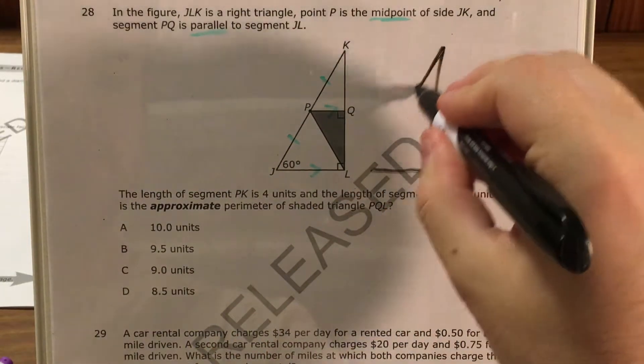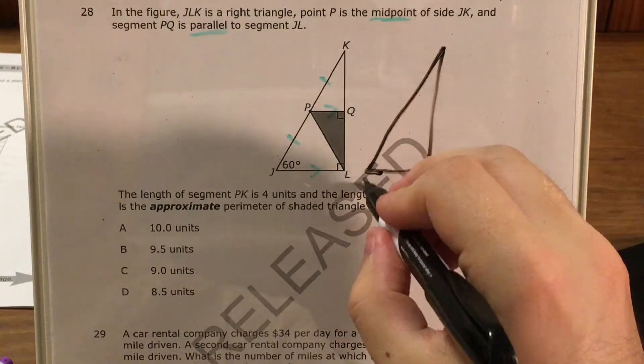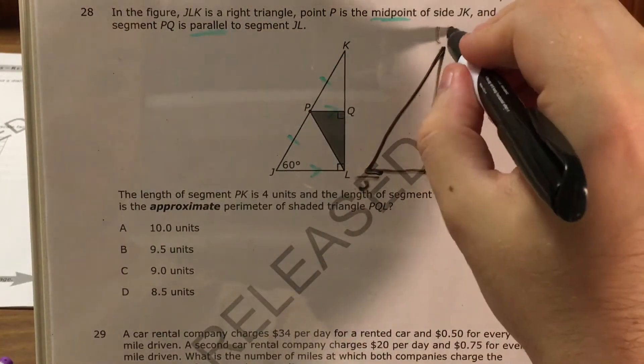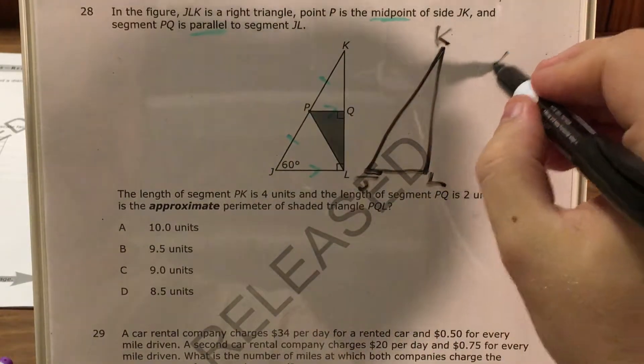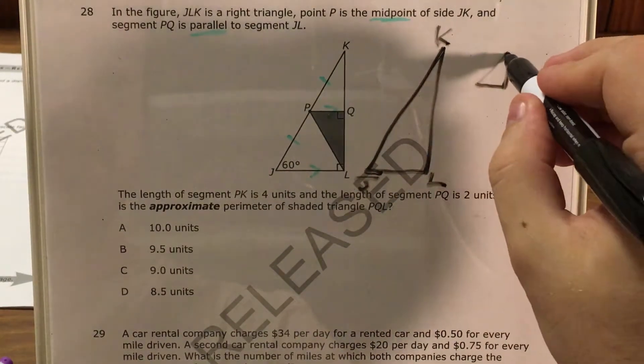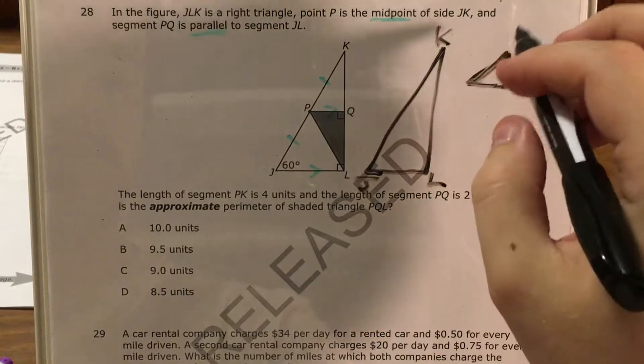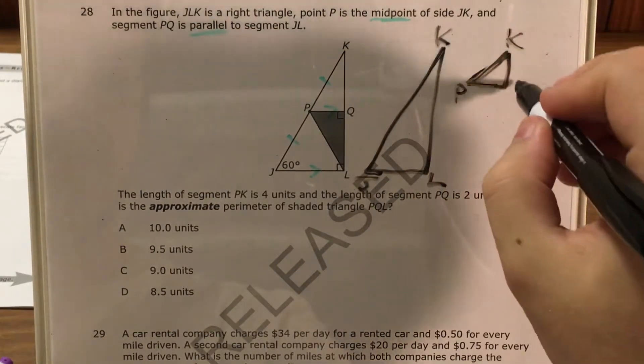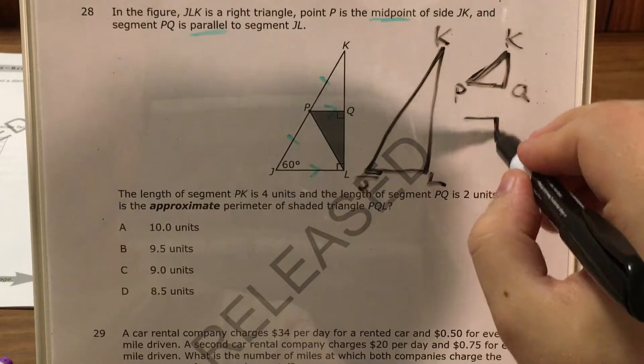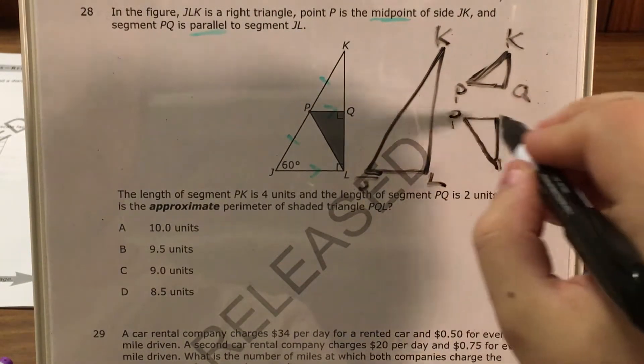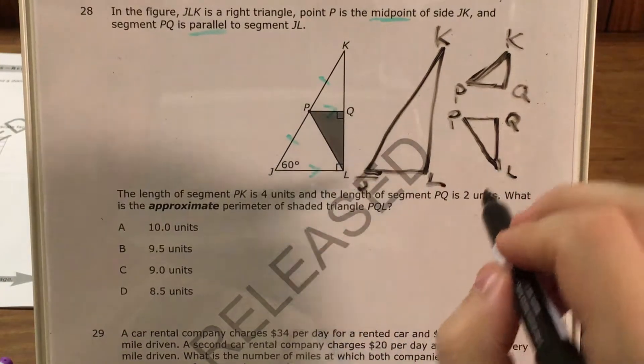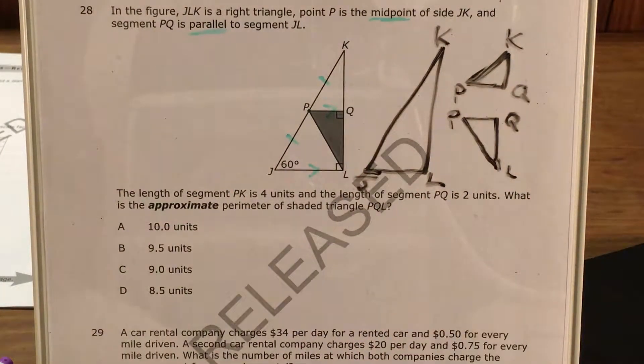So I have this one here, J-K-L. I have a tiny one up here, poorly drawn, but it's triangle P-K-Q. And then I have one that looks a lot like it just flipped over, P-Q-L. And that's the one I'm most interested in, triangle P-Q-L, because it's shaded and we're specifically told that we're trying to find its perimeter.